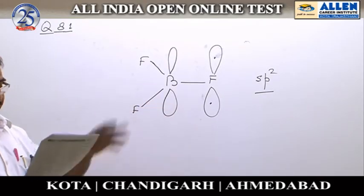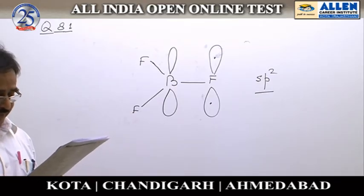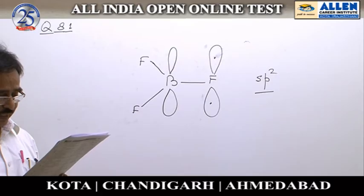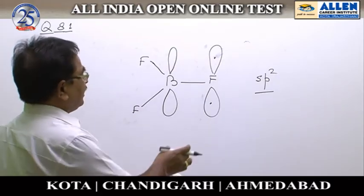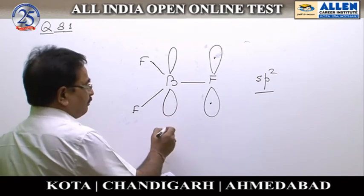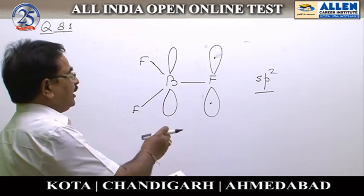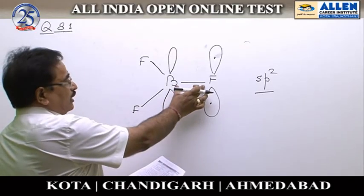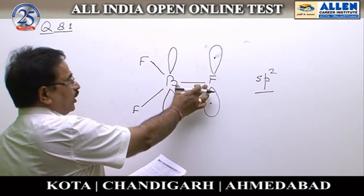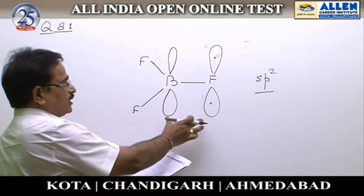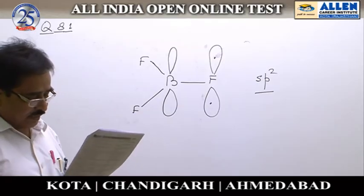The second option states that the BF bond length is smaller than the sum of the covalent radii of boron and fluorine. In BF3, there is P-pi to P-pi back bonding, and because of this back bonding, the internuclear distance — that is, the bond length — decreases. This is a consequence of back bonding.